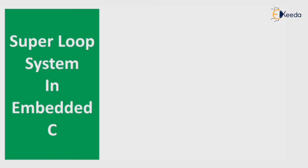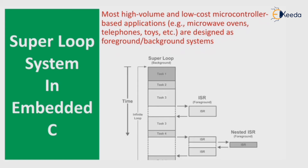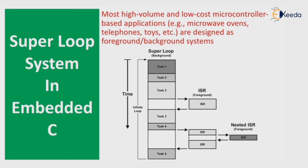The super loop system in embedded C: the most high-volume, low-cost microcontroller-based applications — for example, microwave ovens, telephones, and electronic toys — are designed as foreground and background systems. Here you can see a foreground and background system in a super loop. The long vertical part is showing a super loop having task 1, task 2, and task 3.